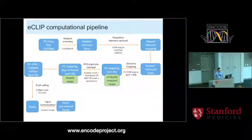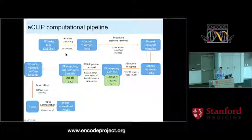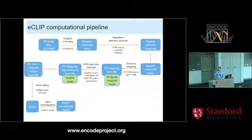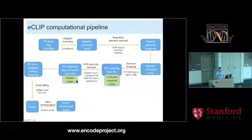The overall processing pipeline has many steps. We have FASTQ files - we sequence paired-end, and I'll explain why. We do adaptive trimming, remove repetitive elements, map to the genome to get uniquely mapped reads, remove PCR duplicates to get usable reads, and then take read two to perform peak-calling.